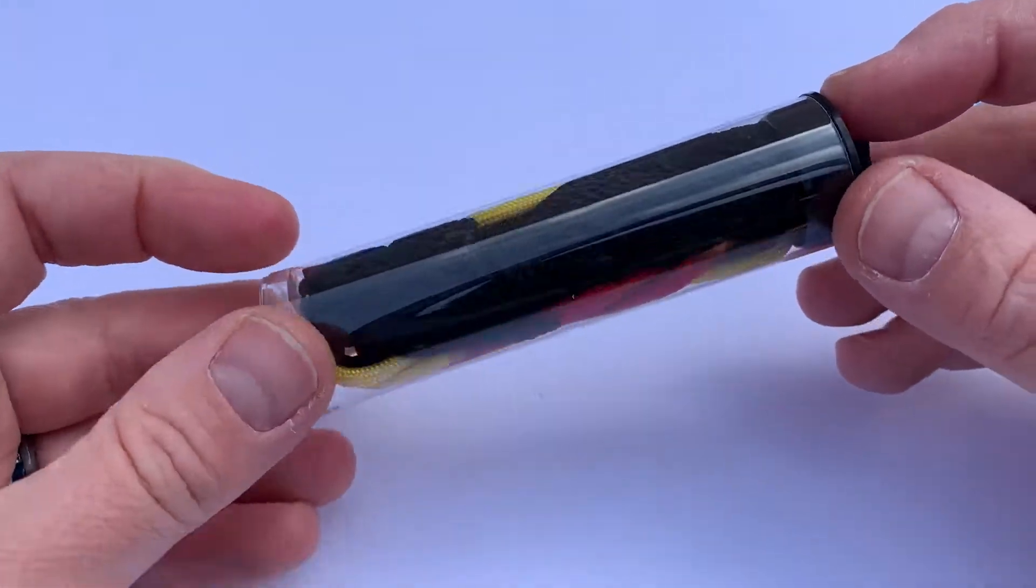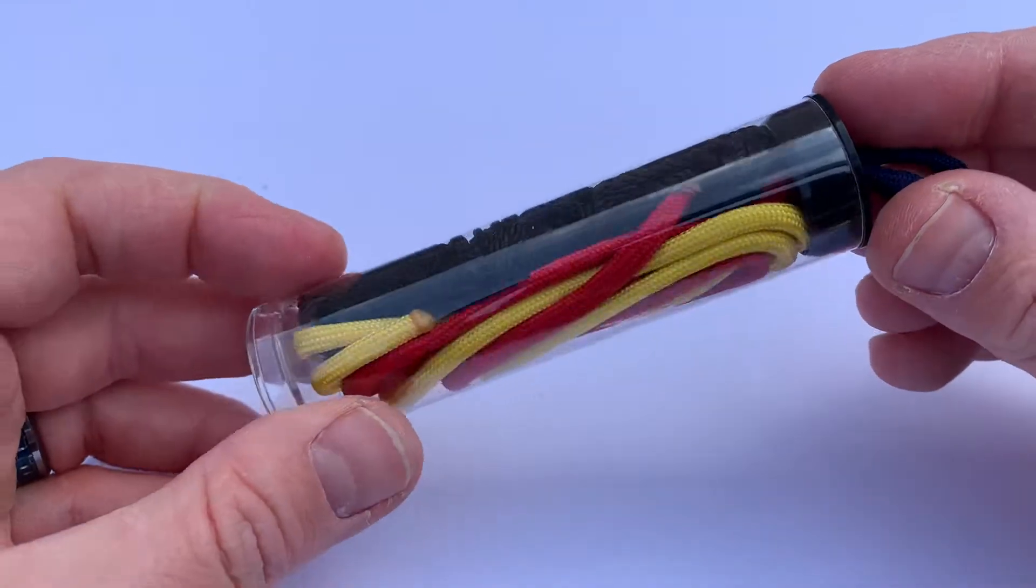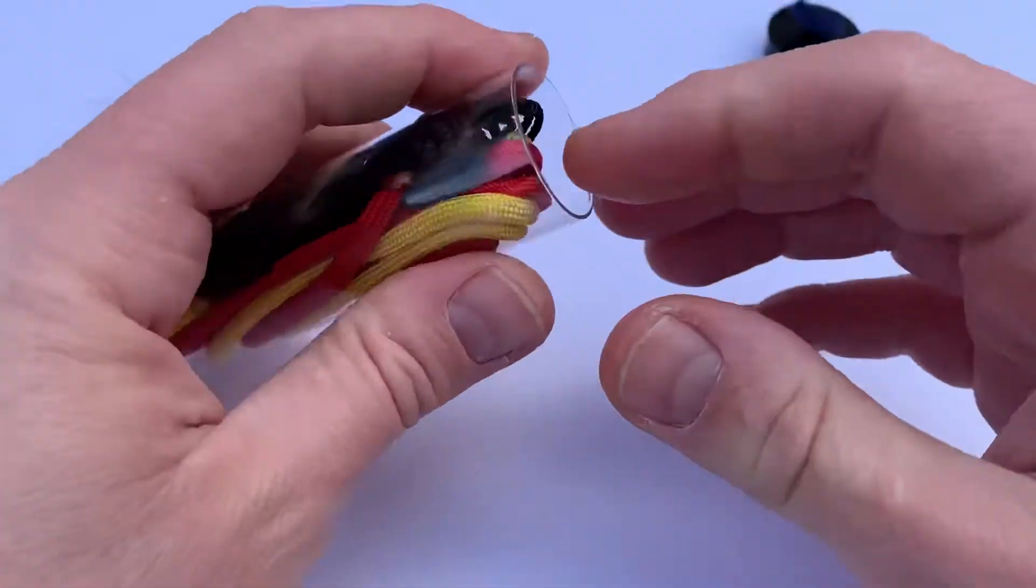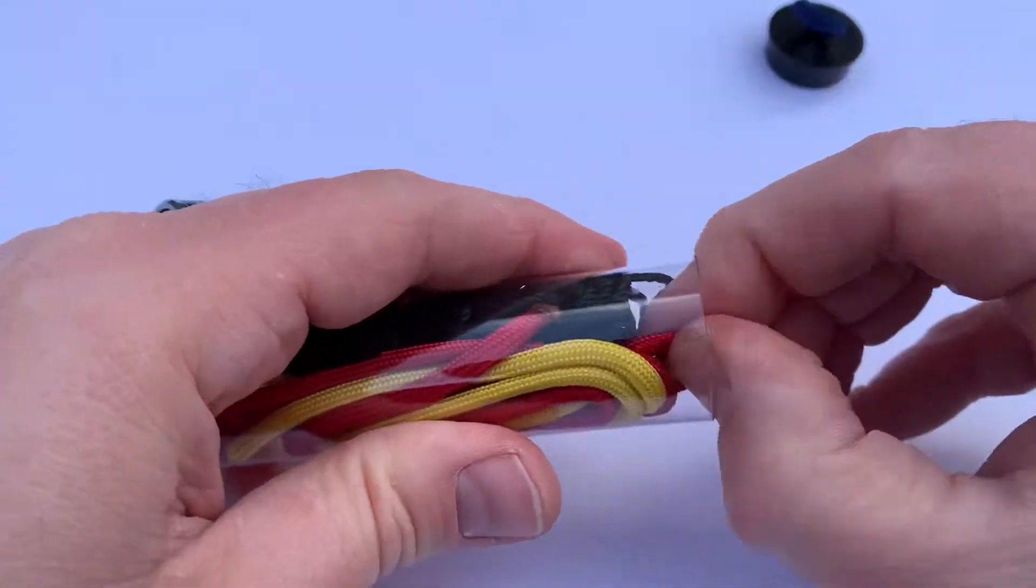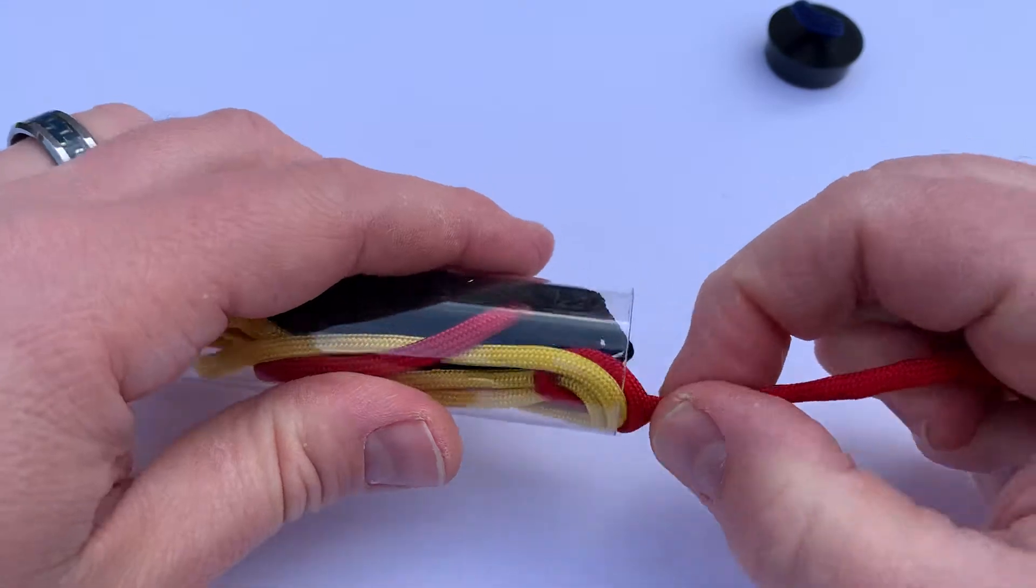The cordage kit is part of the 10 C's. In here, I decided to include a couple things. Paracord is certainly the most popular type of cordage to have on you.